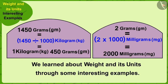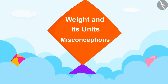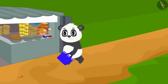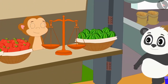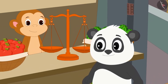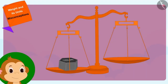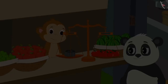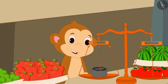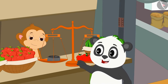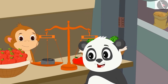In this video, we will look at some misconceptions related to weight. Golu has come to the market to buy apples. He went to Babban's fruit stall and asked for apples for 50 rupees. Babban placed apples on his weighing scale and told Golu he will get 1,000 grams of apples for 50 rupees. Golu got excited, thinking that was a lot of apples.